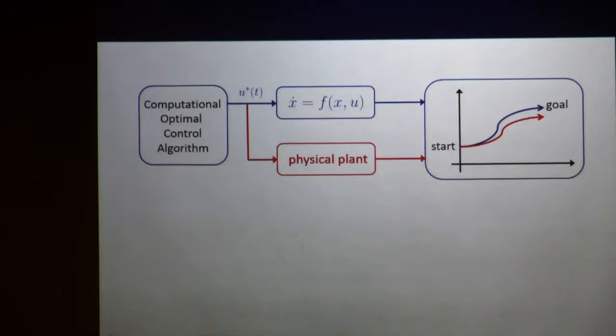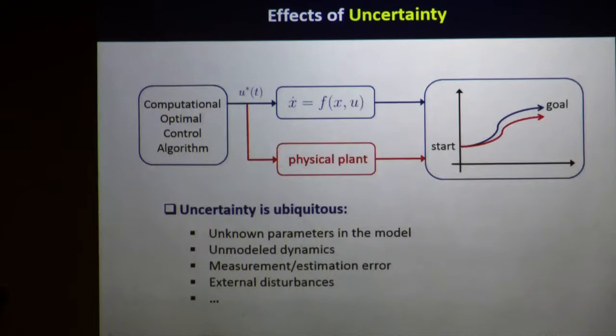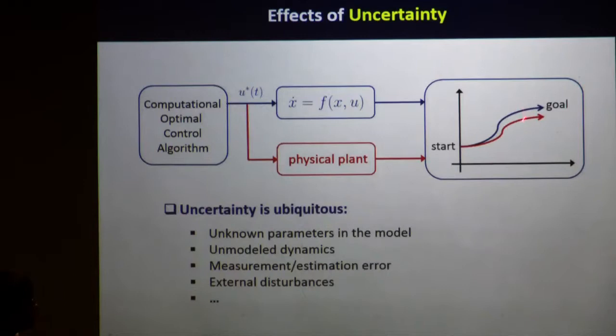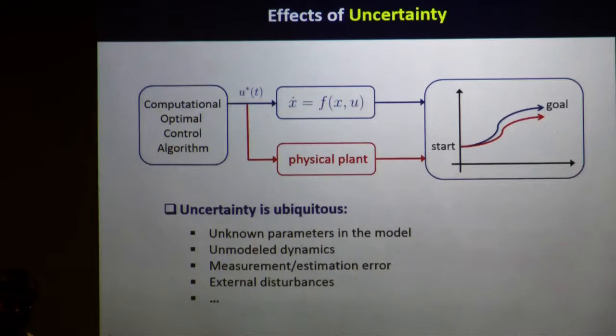Why is there a difference between the planned trajectory and the real trajectory? As a control engineer, it's actually simple: it's nothing but the effect of uncertainty. In any control system, there are many sources of uncertainty. You can have unmodeled dynamics, unmodeled parameters in your mathematical model, measurement noise, sensor noise, and external disturbance. All of those uncertainties not explicitly modeled in your mathematical problem formulation will basically cause this deviation of the real trajectory from the planned trajectory.